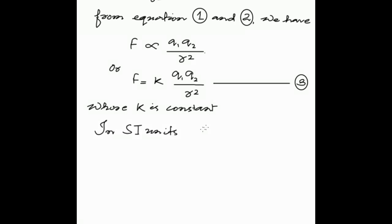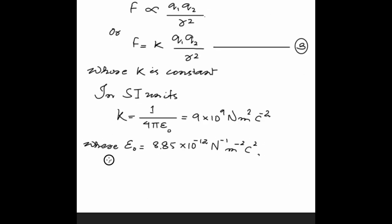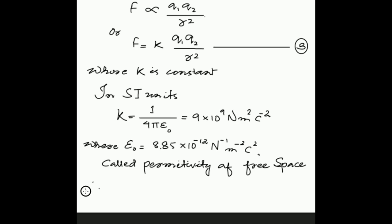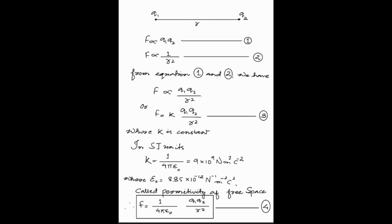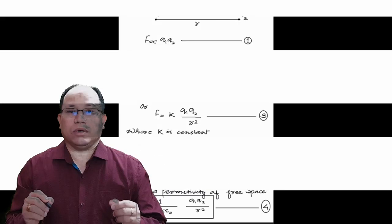For two charges located in free space in SI units, the constant K is equal to 1 upon 4 pi epsilon naught, and after solving, this value becomes 9 × 10⁹ Newton meter squared per coulomb squared, where epsilon naught is called the permittivity of free space. So we can express Coulomb's Law in SI units as F = (1 / 4πε₀) × (Q1 Q2 / R²). This is the basic formula of electrostatics.